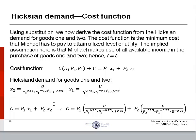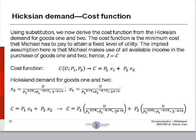The cost function is the minimum cost that Michael has to pay to attain a fixed level of utility. The implied assumption here is that Michael makes use of all available income in the purchase of goods 1 and 2. Hence, income equals cost. So, income, where before it was equals P1 x1 plus P2 x2, now it's cost, right? So cost in terms of utility and prices.